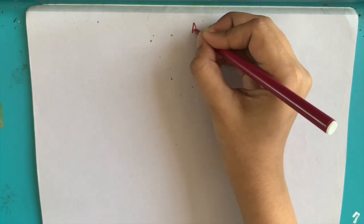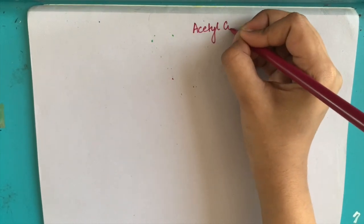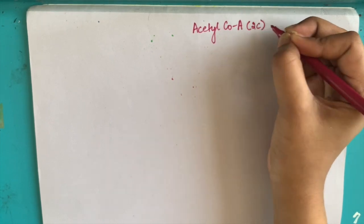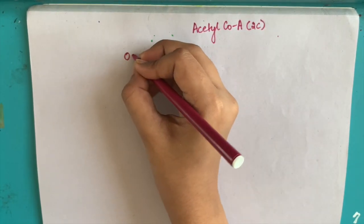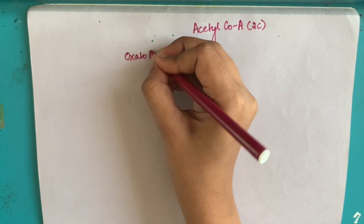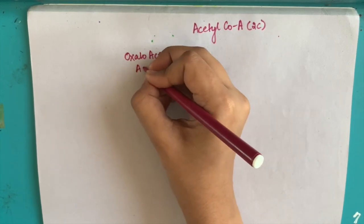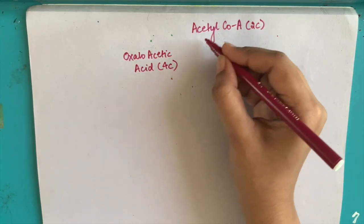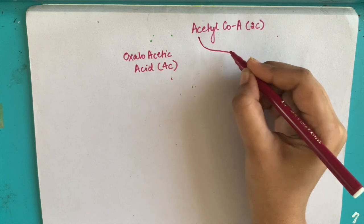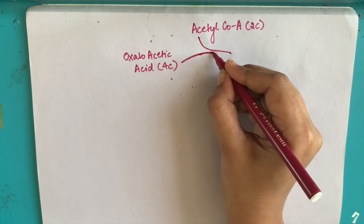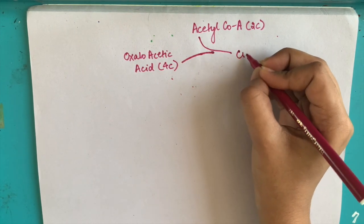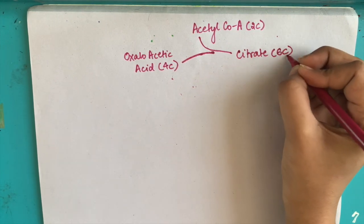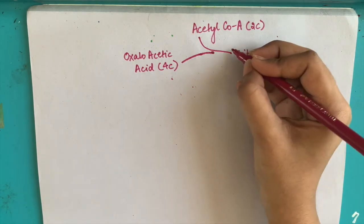Now let us start with Krebs cycle. The cycle starts with the last product of oxidation of pyruvate, acetyl coenzyme A, which is a 2-carbon molecule. It combines with oxaloacetic acid, a 4-carbon molecule, to give the first product of TCA, citrate. Since a 2-carbon molecule and a 4-carbon molecule have combined, citrate is a 6-carbon molecule.